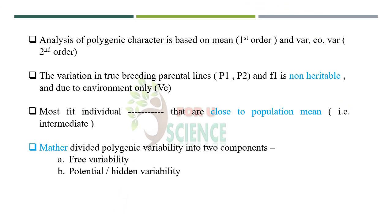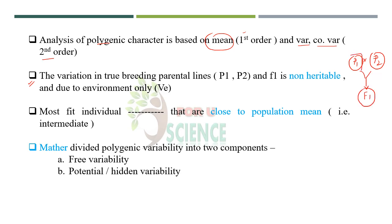As we know, the analysis of a polygenic character is based on first-order statistics — that is the mean — and second-order statistics such as variance and covariance. In breeding we use pure lines like P1, P2, and F1, and we use these pure lines to produce the advanced generations. Any variation present in these lines — P1, P2, and F1 — will not be heritable; it will be due to environment only.